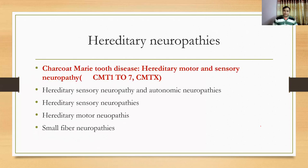Hereditary neuropathies are of different types. The most common type is Charcot-Marie-Tooth disease, which is a hereditary motor and sensory neuropathy. It has different variants from CMT1 to CMT7 and CMTX. From CMT1 to CMT7, there are even further subclasses like CMT1A, 1B, 1C, 1D — there are so many variants of Charcot-Marie-Tooth disease.